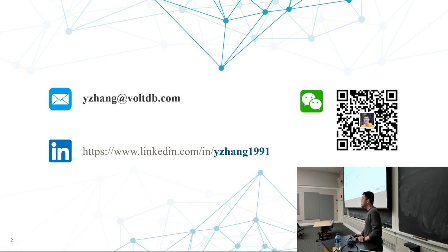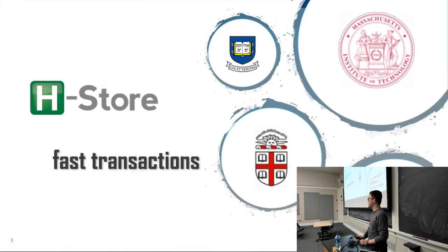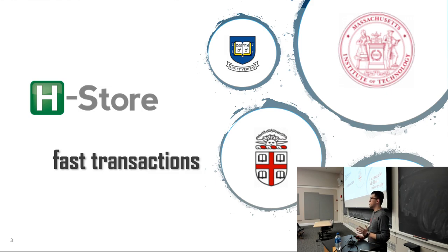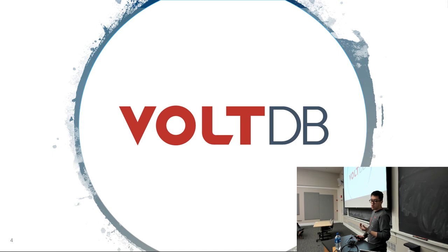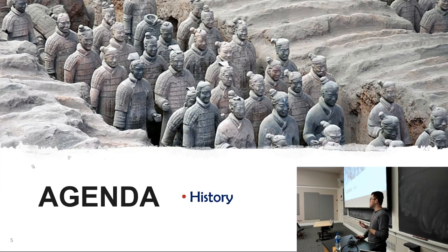So today all my stories are about HStore. The HStore project is a collaboration among researchers from several universities like MIT, Brown, and CMU. It sets forth a specialization of a database for fast transactions. HStore was commercialized as VoltDB in 2009, and since then both systems have evolved a lot in their respective realms — academia and industry.